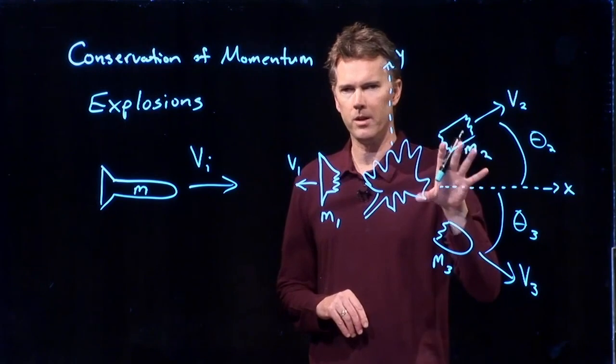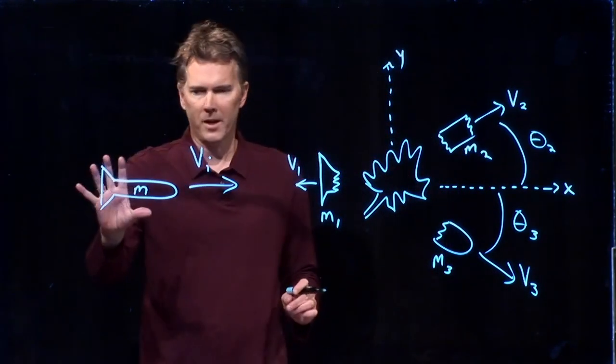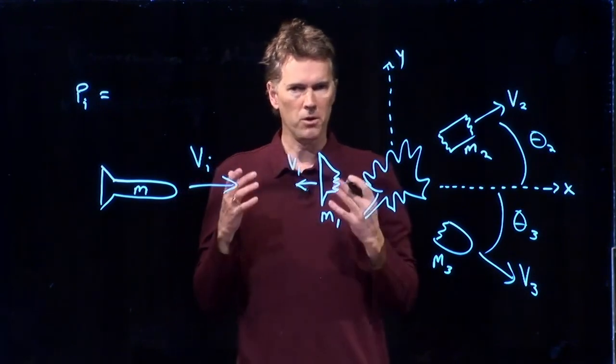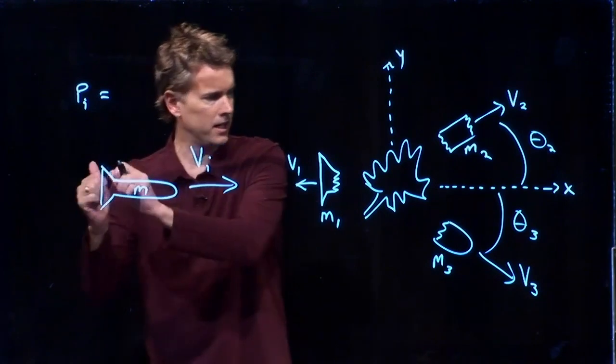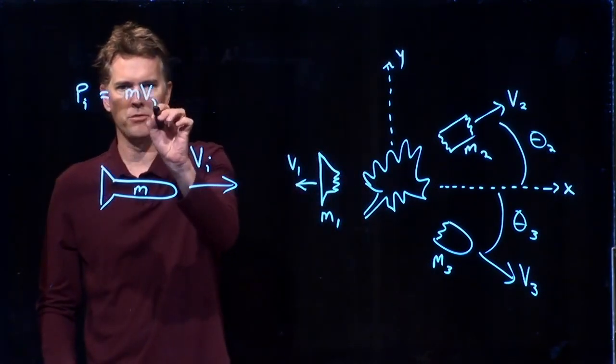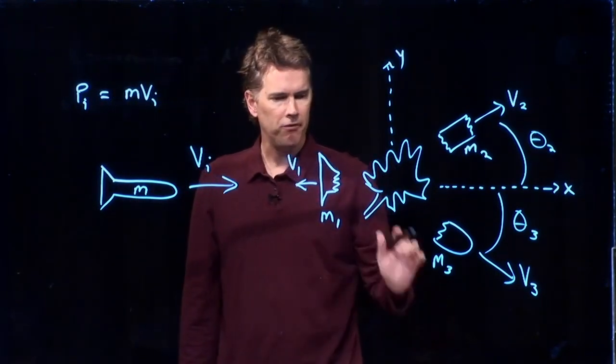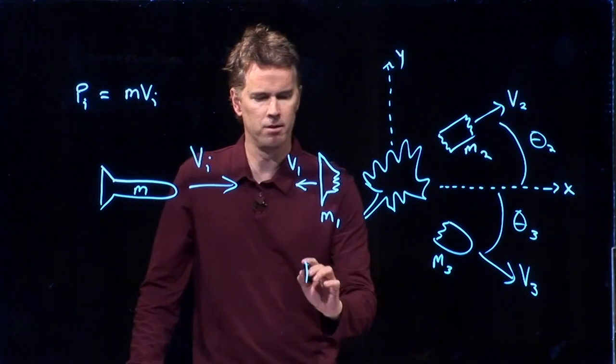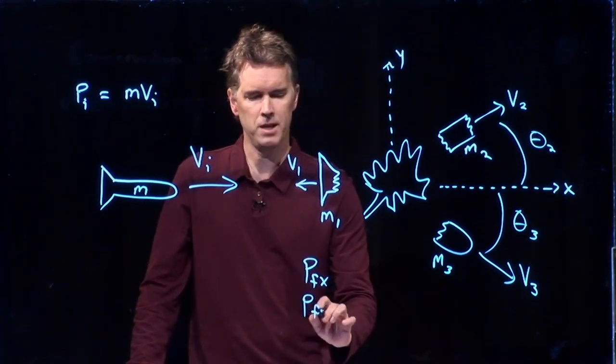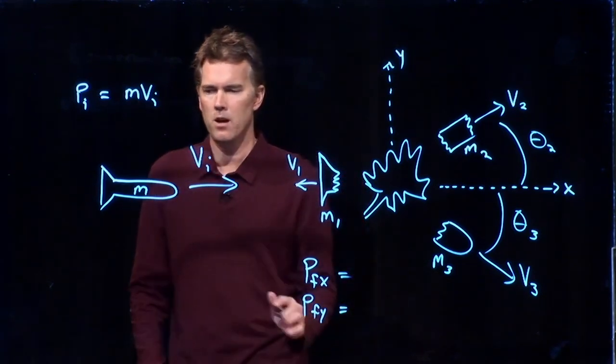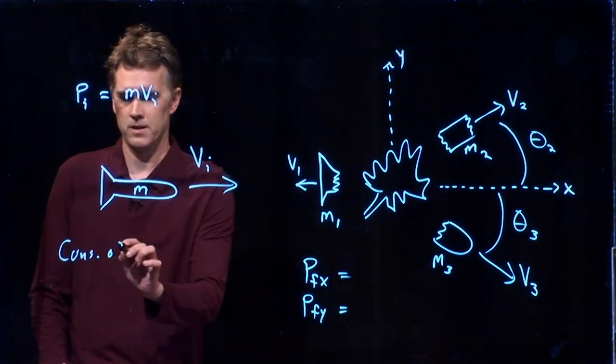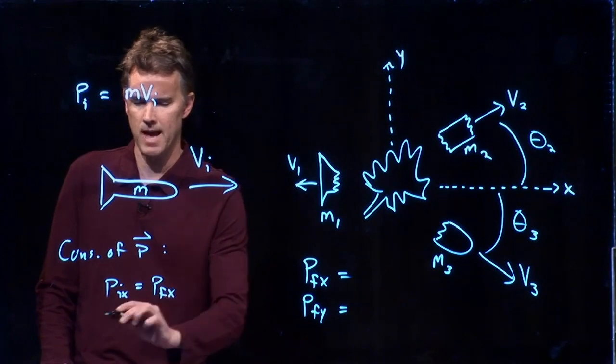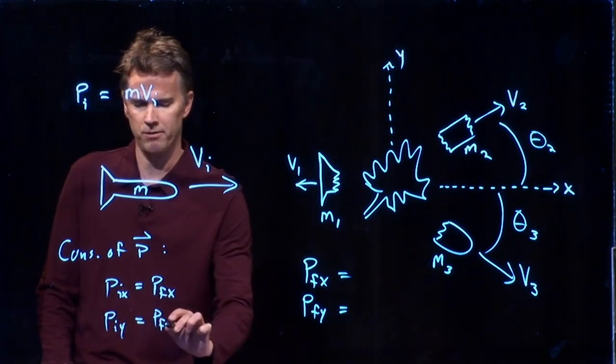Let's now analyze this from the point of view of conservation of momentum. In our before picture here, what can I say about the initial momentum of the system? We know that momentum is just mass times velocity. Everything is heading in the positive x direction, so this is just M times V_I. In the final picture over here, we have a couple different things: we have P final in the x and we have P final in the y. What I know is that conservation of momentum tells me the following: P initial in the x is equal to P final in the x, P initial in the y is equal to P final in the y.